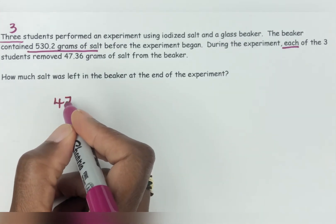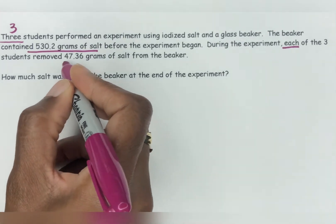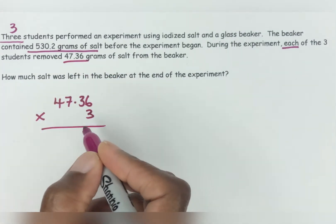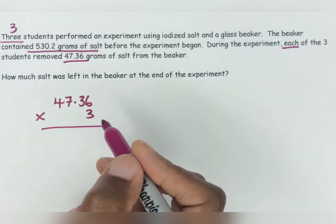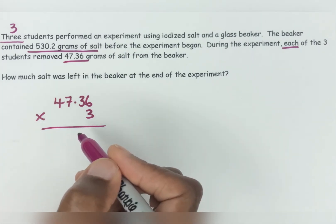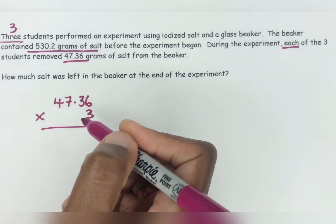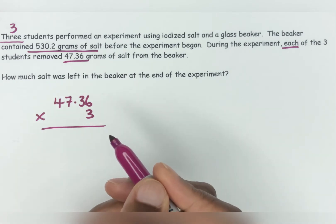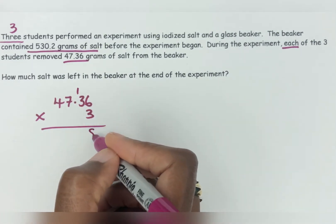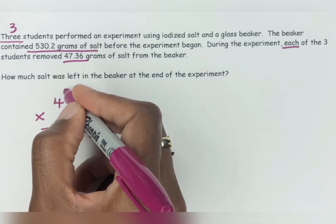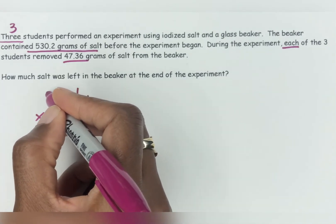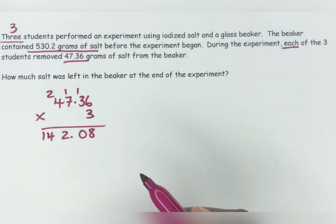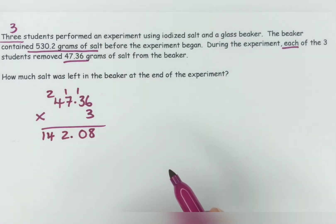So we're going to do 47.36 multiplied by 3, because we need to know the total amount removed by all three students. Working through the multiplication we get 142.08. And then we can take that away from the total of 530.2 grams that was in the beaker before the experiment began.